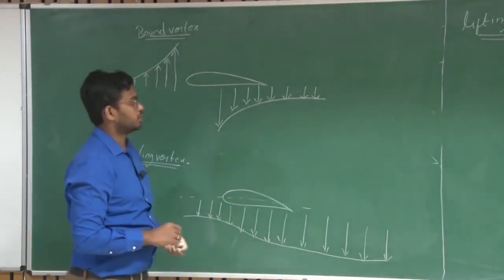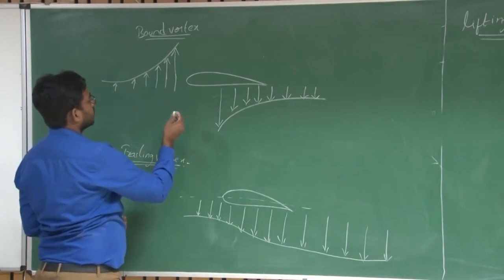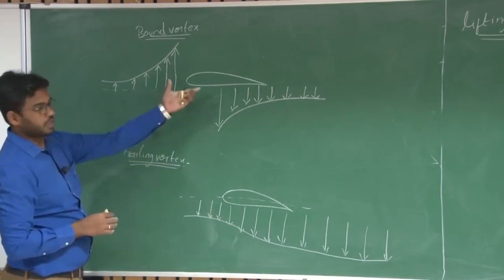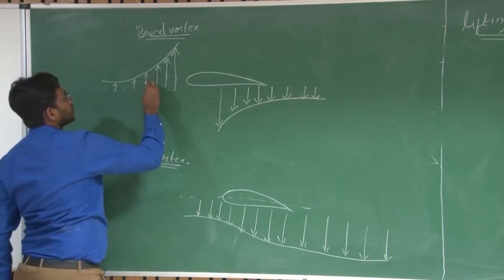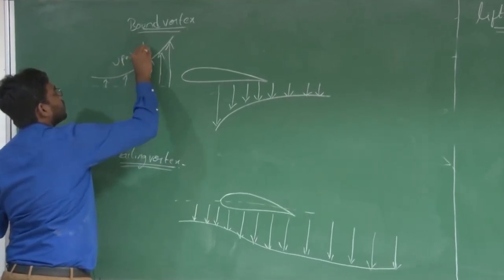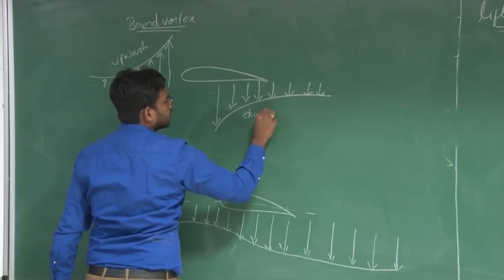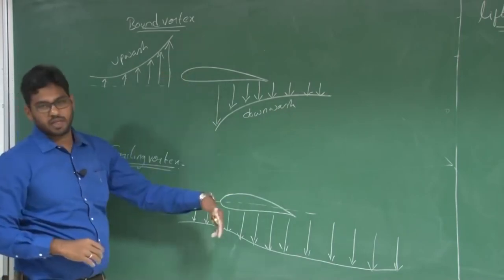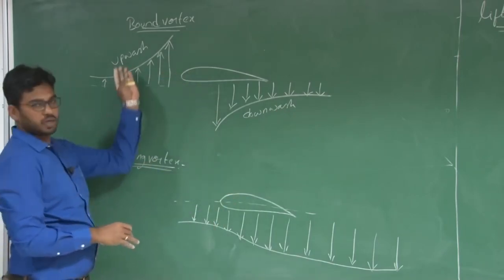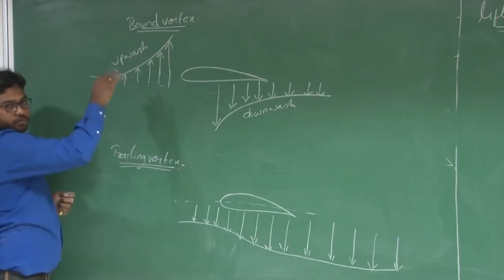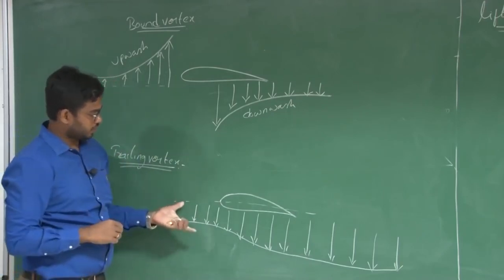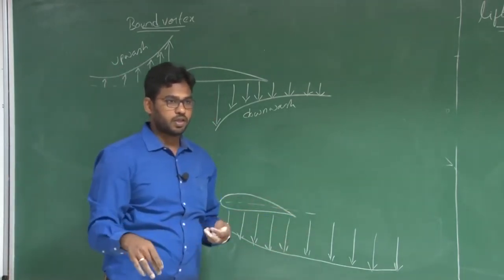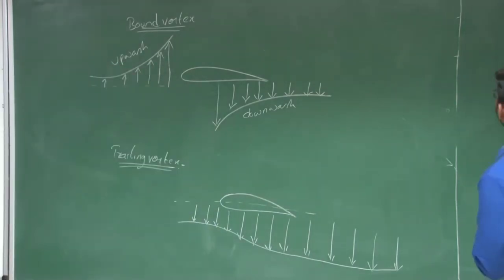The horseshoe vortex is used to model the lift of a finite wing. The bound vortex will induce an upwash ahead of the wing and a downwash behind the wing. The trailing vortex creates a downwash throughout the span of the wing. This combination of upwash and downwash alters the local angle of attack at each and every spanwise location.